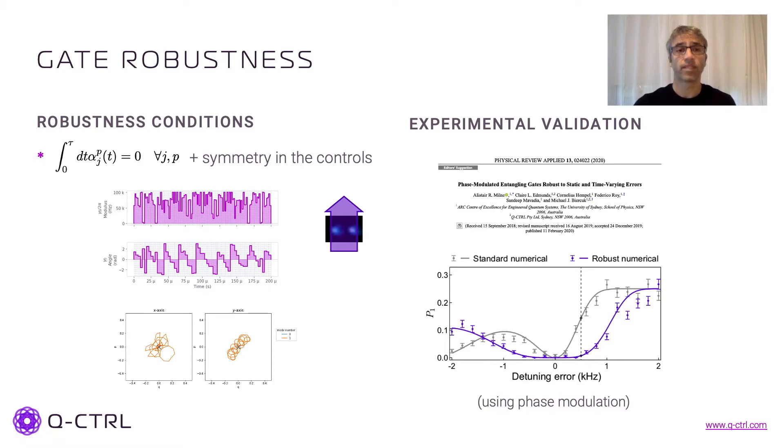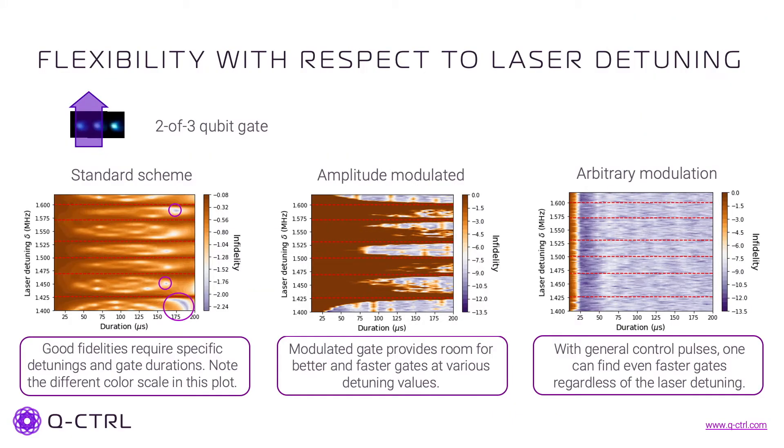Now the flexibility of those gates also hold for changes in the experimental parameters, for example with laser detuning. As I mentioned before, for the standard scheme, we need specific combinations of the duration, which is represented here in the horizontal axis, and the detuning that's representing the vertical axis. The dashed lines are the frequencies of the oscillation modes, and we see that the low infidelities only happen at specific combinations here.